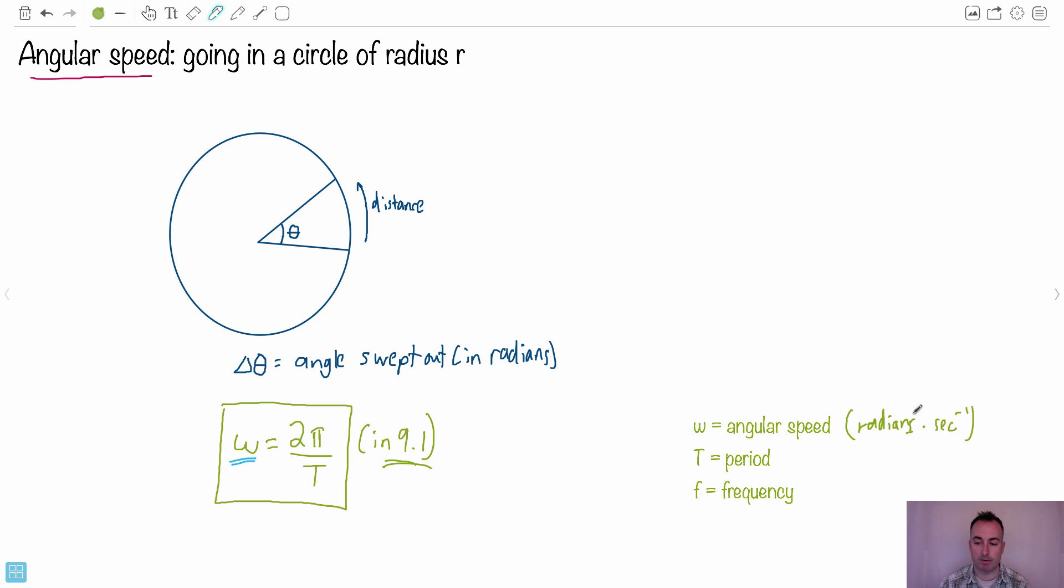T is the period, that's the time it takes to go all the way around. That's in seconds. And we're going to define a frequency. That's in hertz or you could say it's in one over seconds.